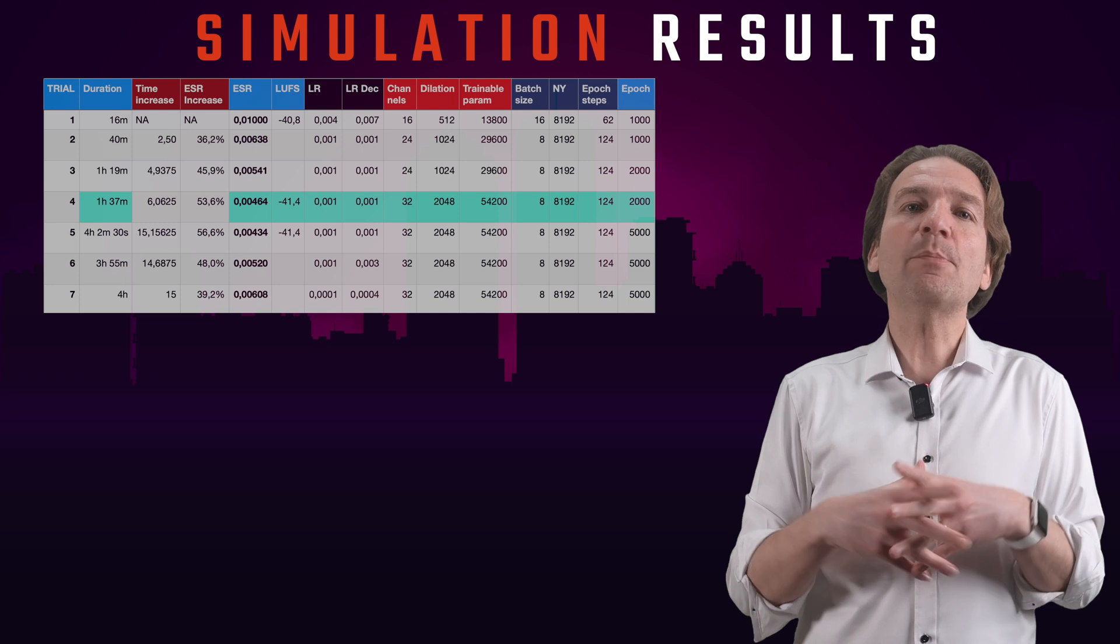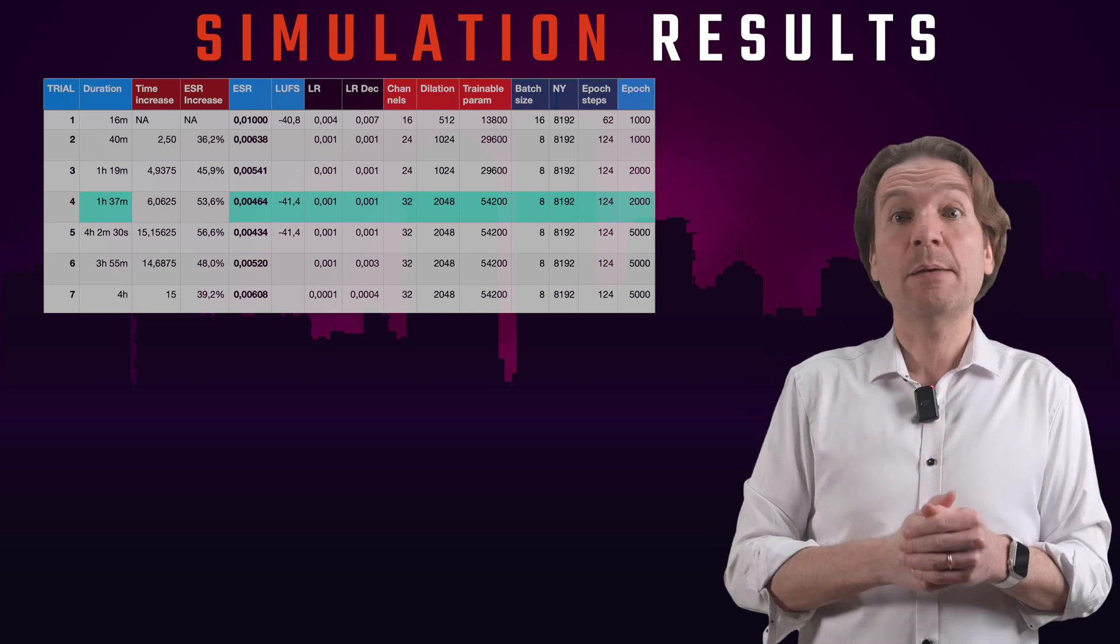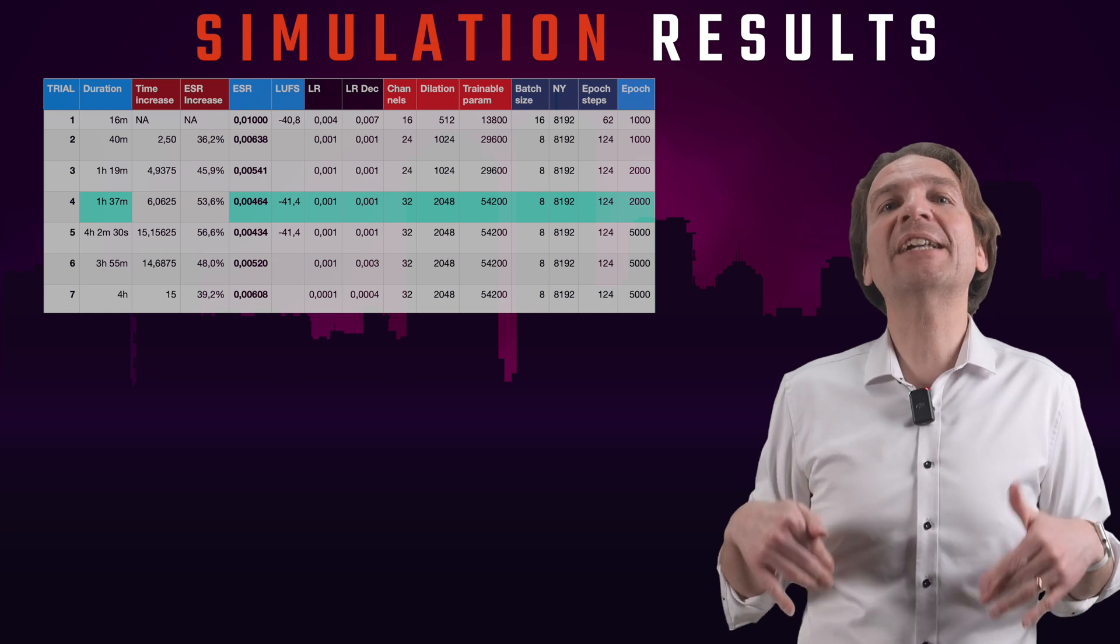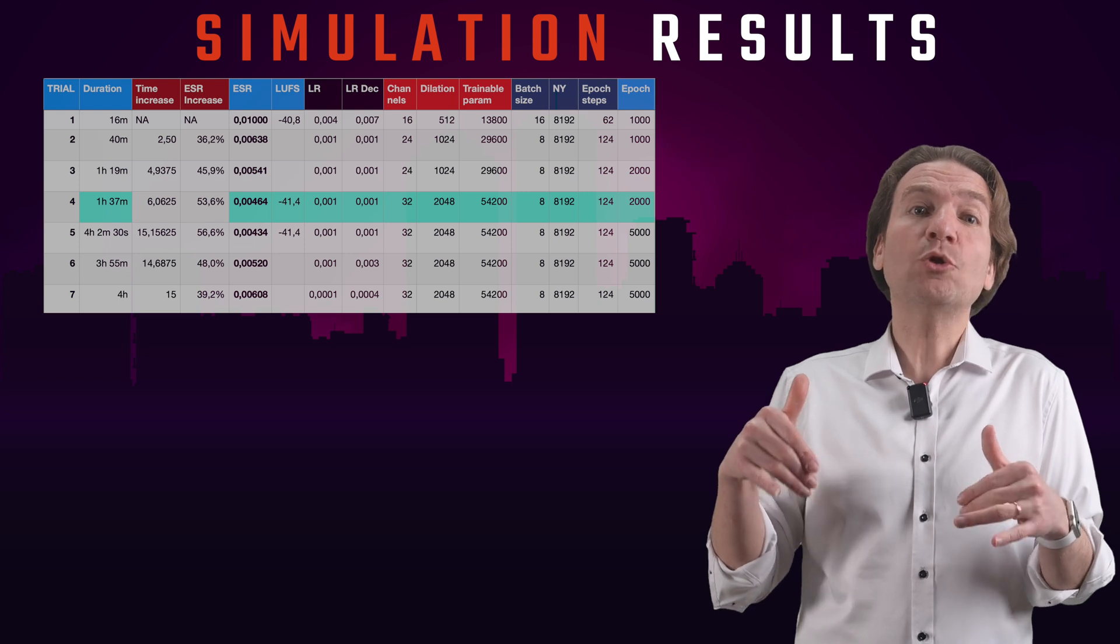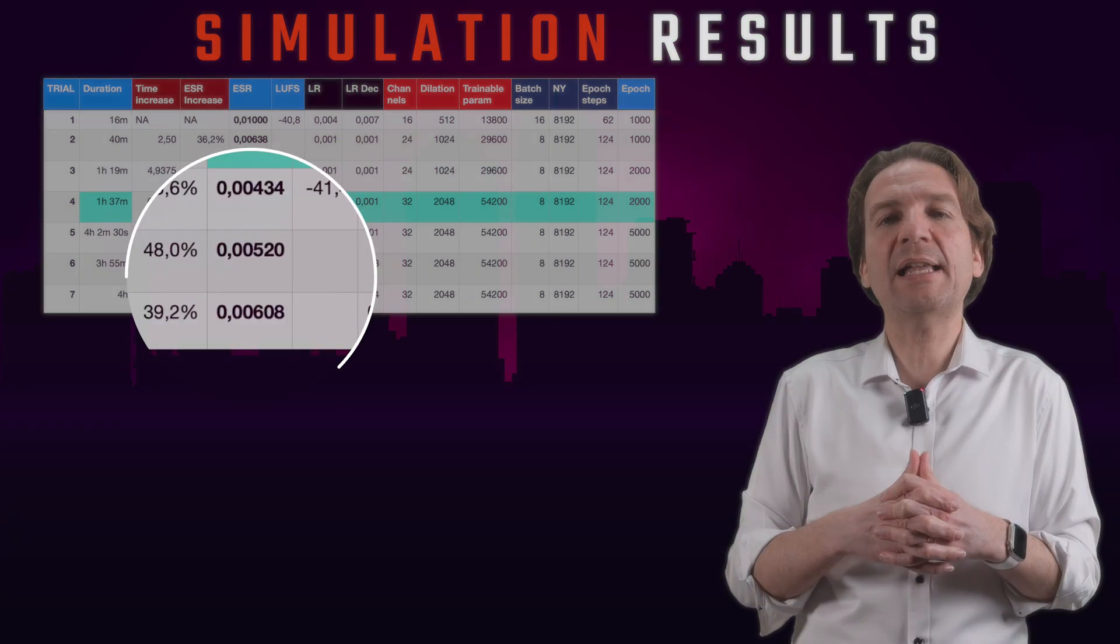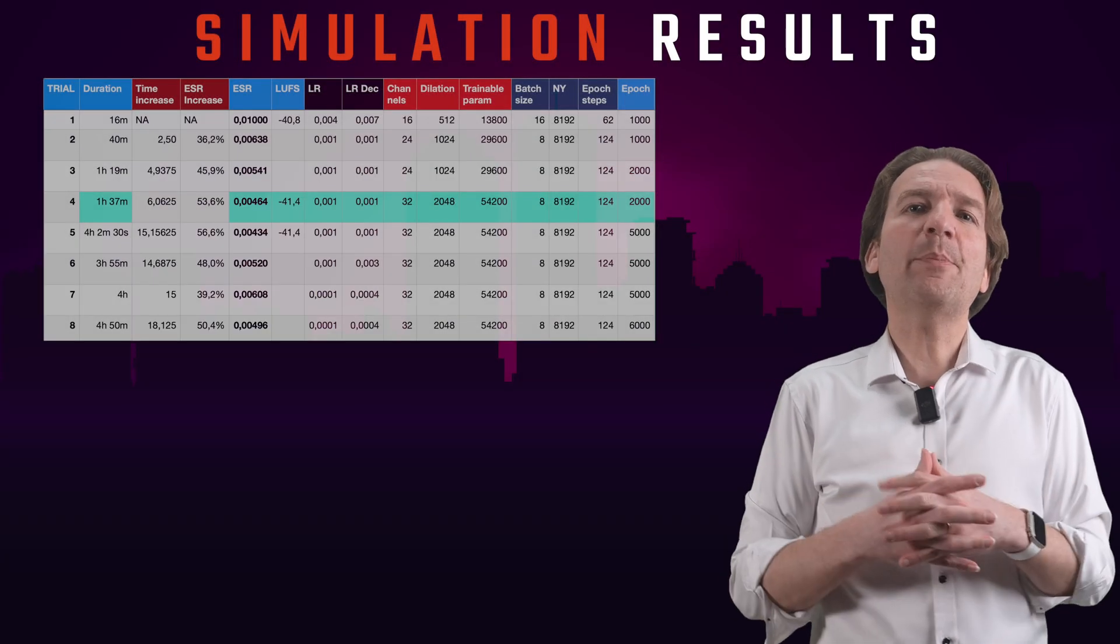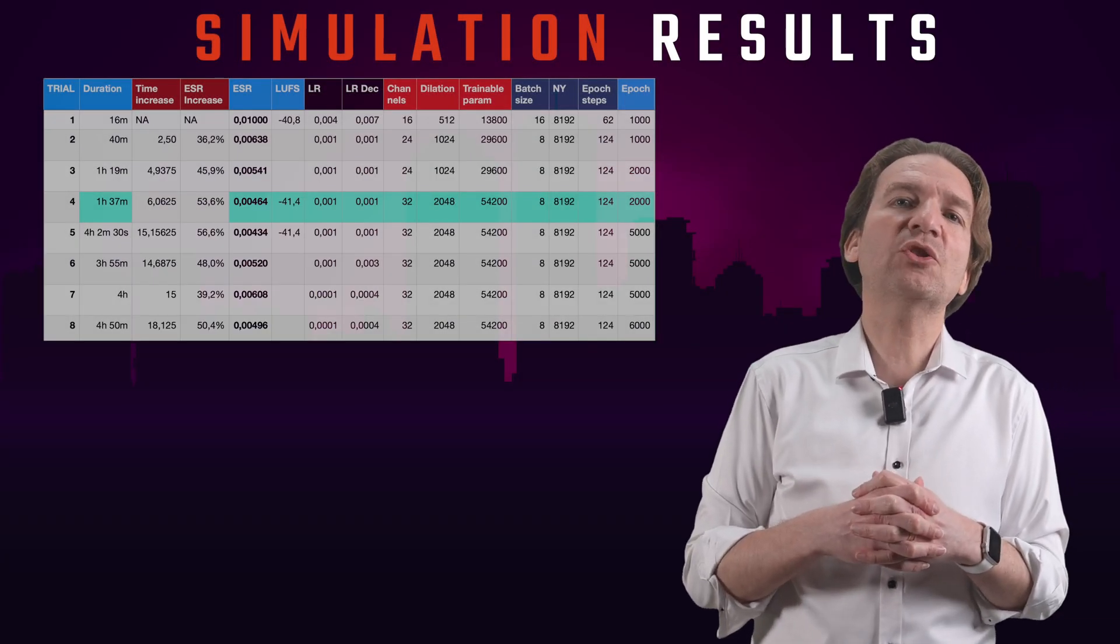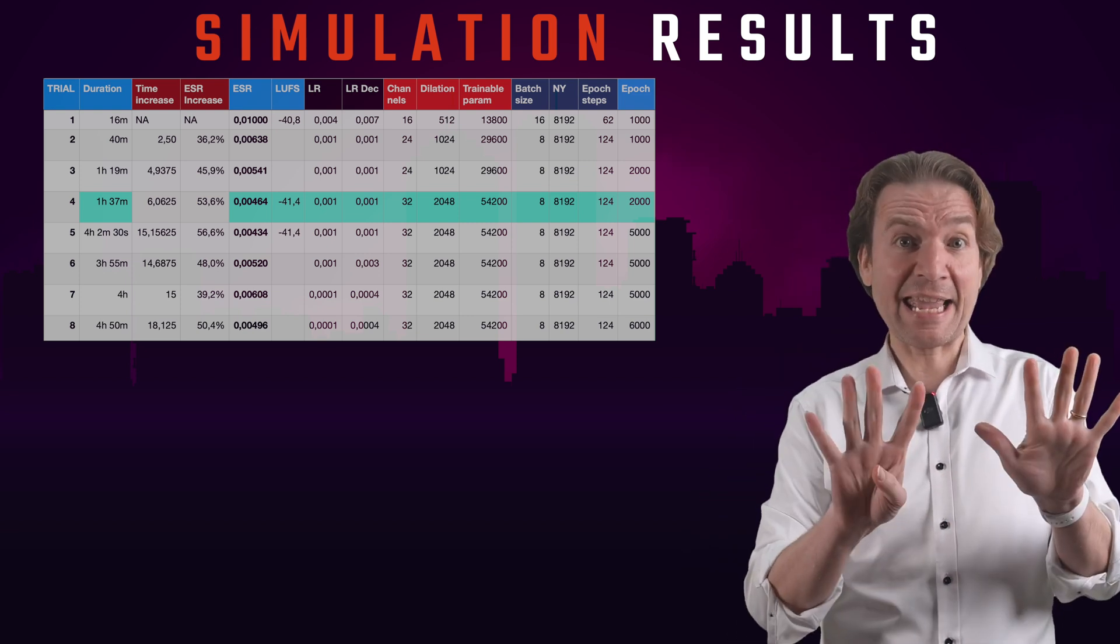I think that the more you increase the precision, the more you have to increase the number of epochs. But the computational time starts to become not manageable. In fact, I increased the number of epochs to 6000 with my trial number 8. And actually, I was not reaching the performance of my previous settings with just 2000 epochs.